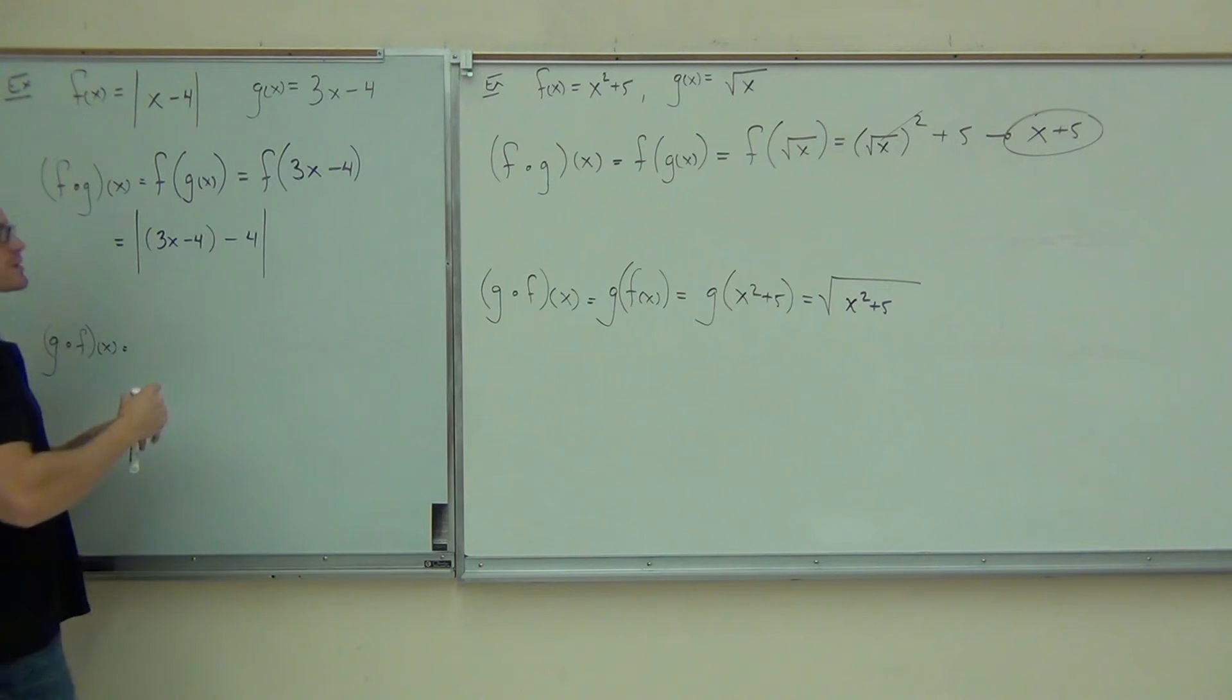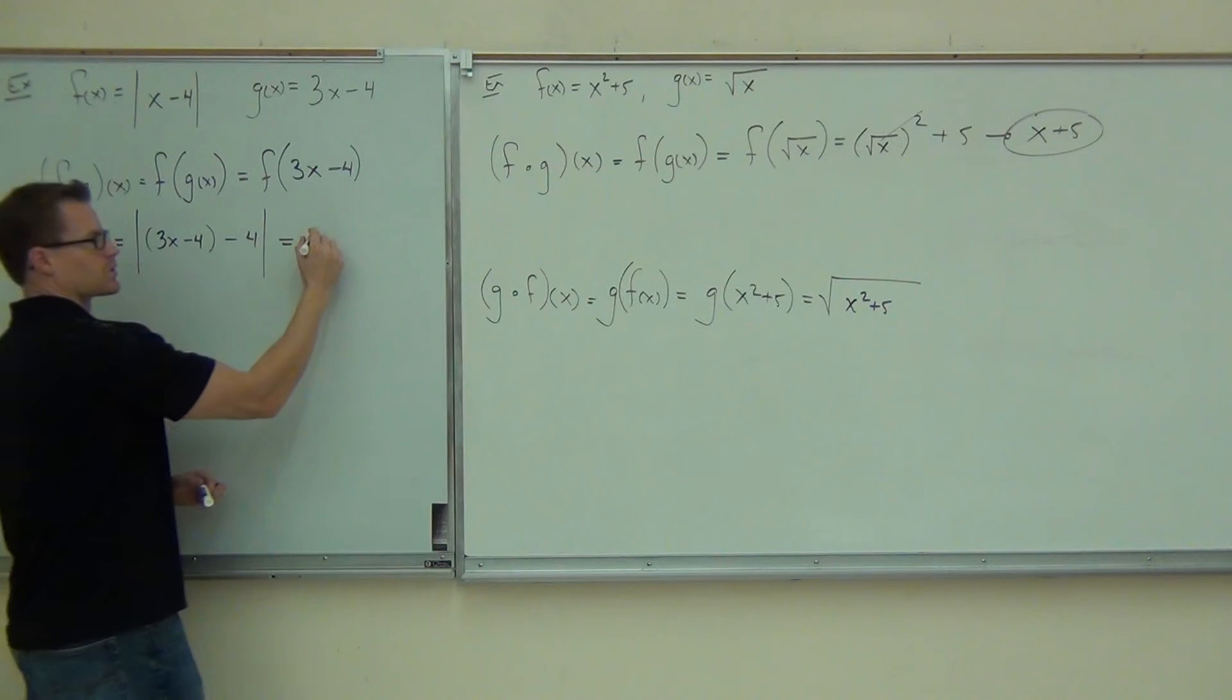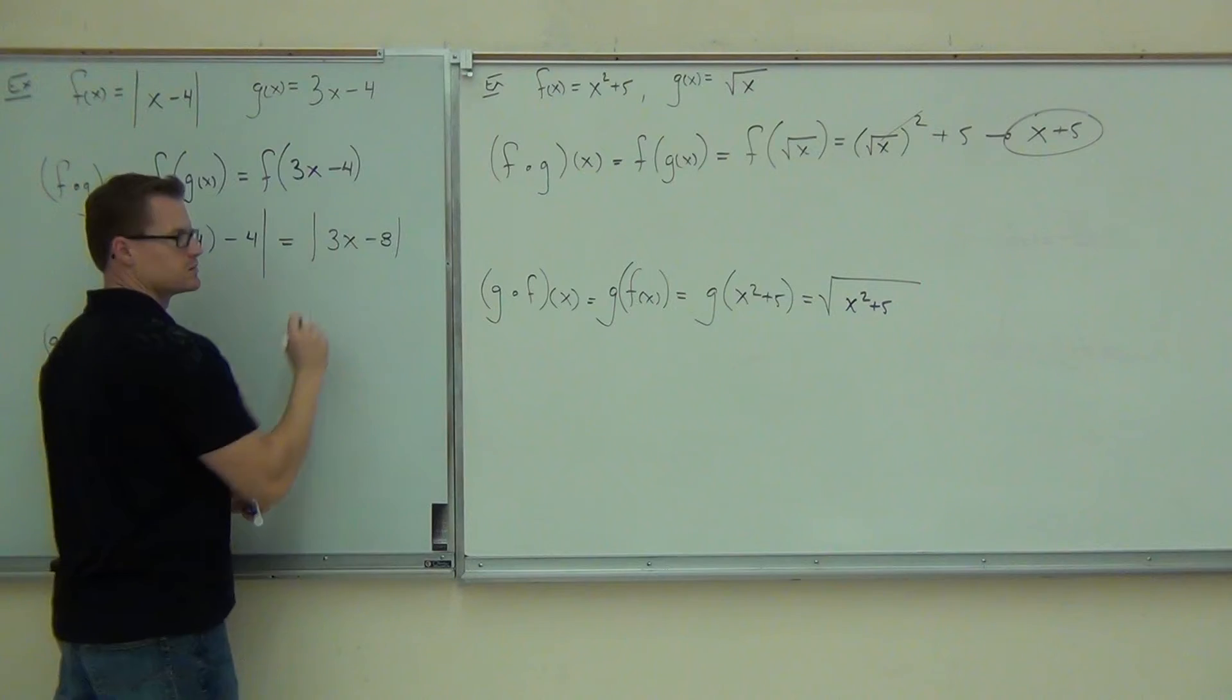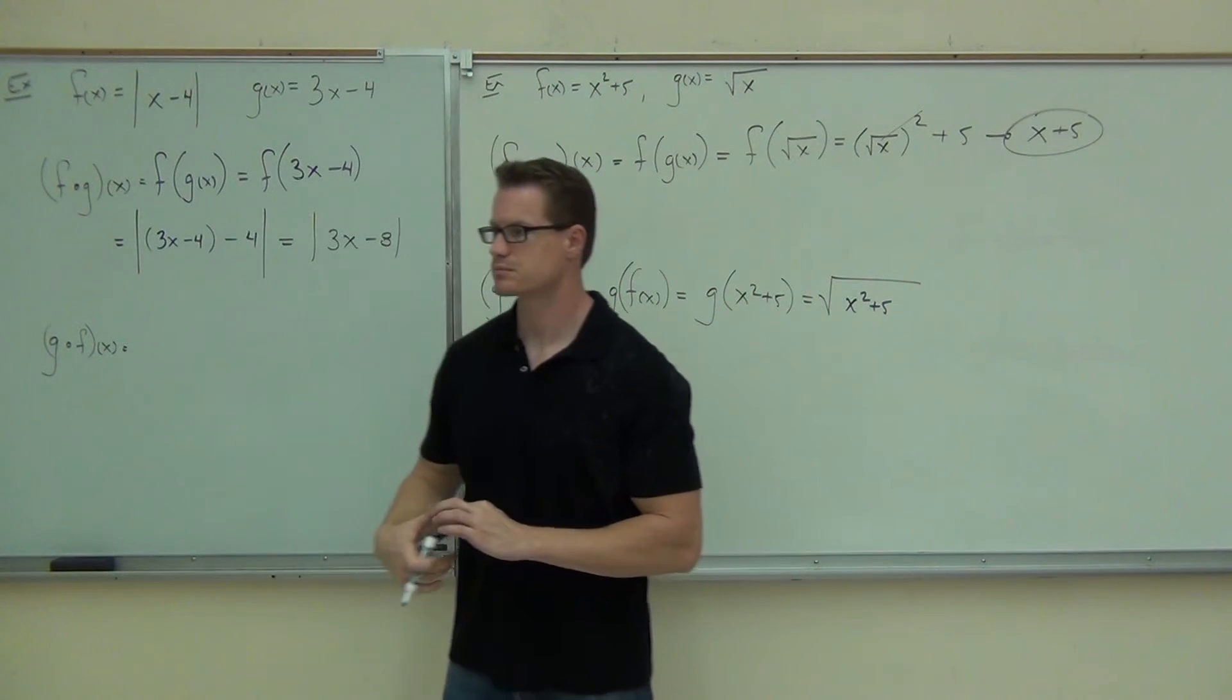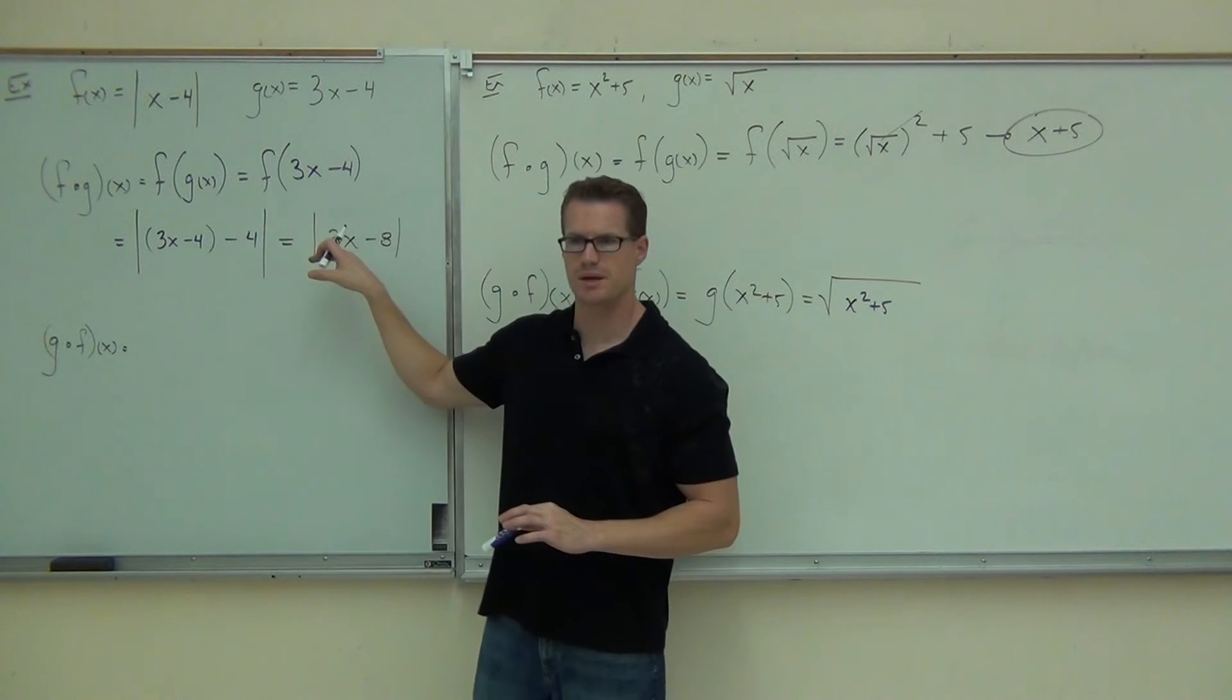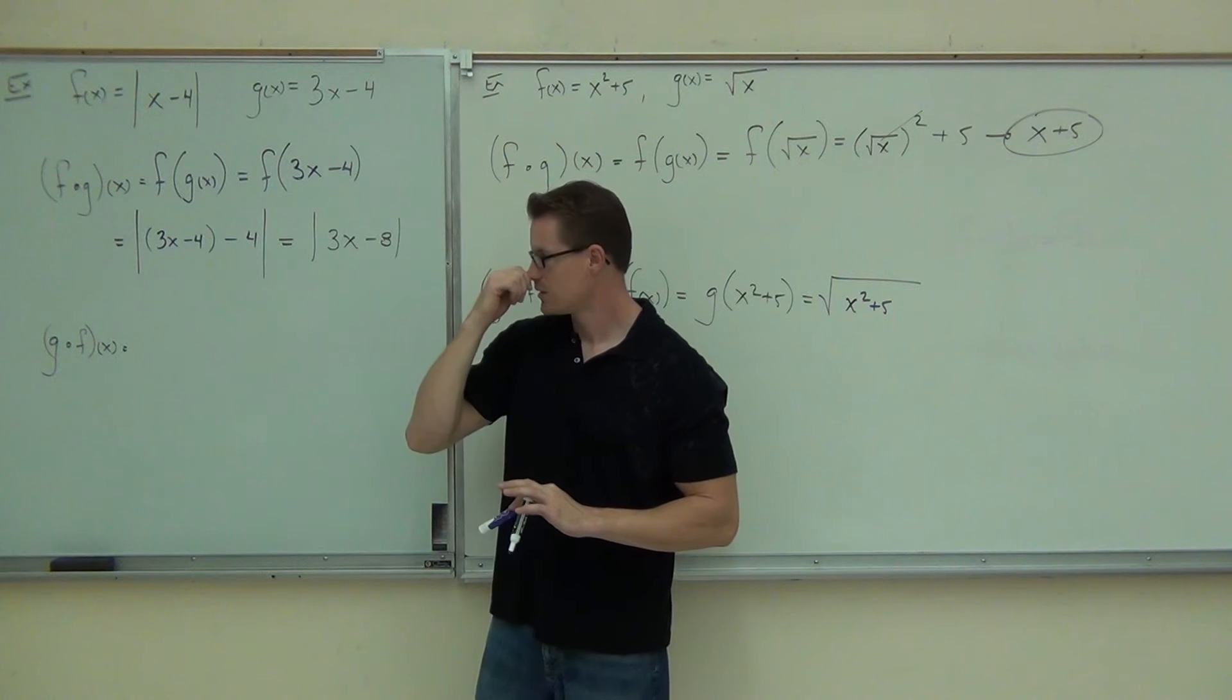Now notice we can do something with this. 3x minus 4 minus 4. That's absolute value of 3x minus 8. You can't do anything past that, but you're done with that. Done with that problem. See where the minus 4 minus 4, that's giving you that minus 8. Ready for the last one?